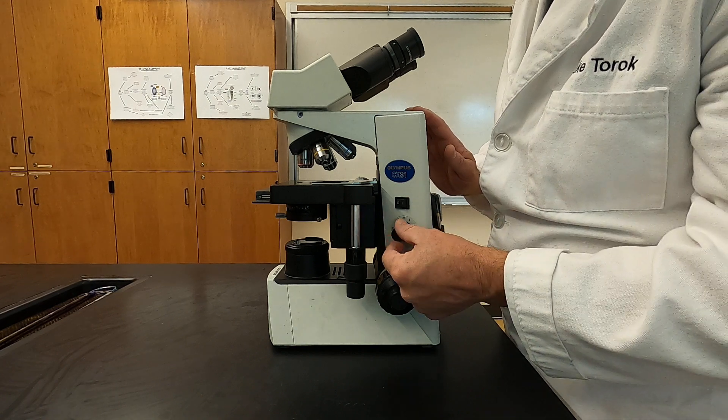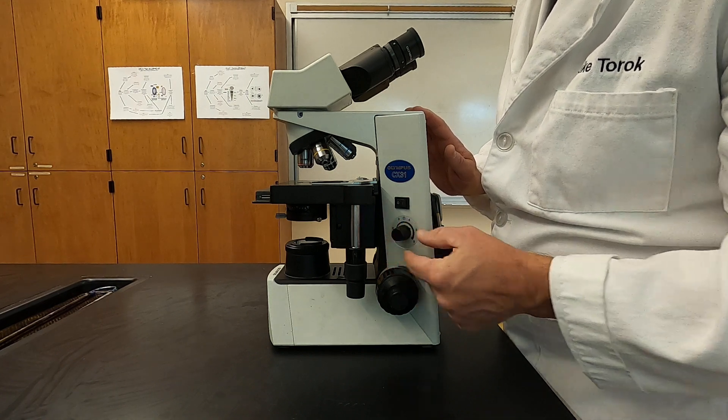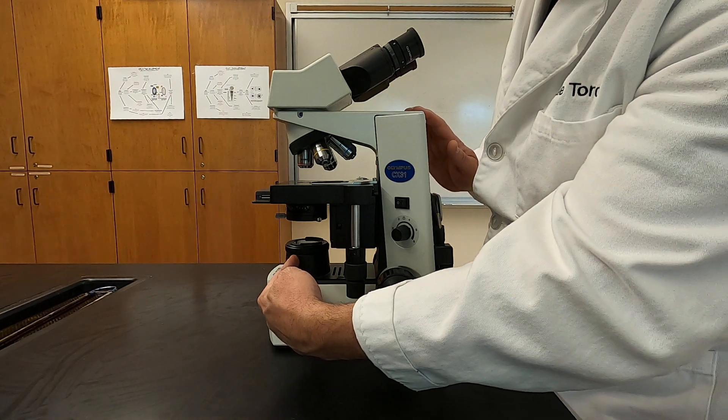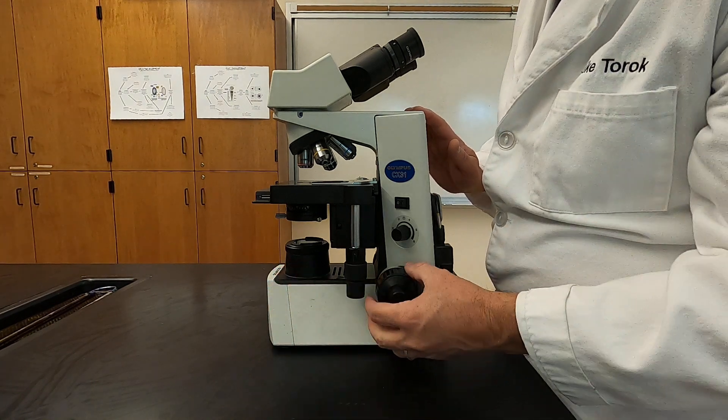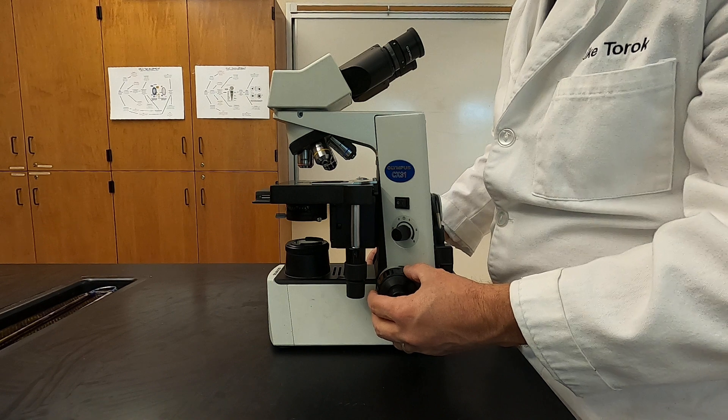This allows you to adjust the intensity of the light coming from our light source here at the bottom. Along this side and along the opposite side down here, along the base here, are the focusing knobs.